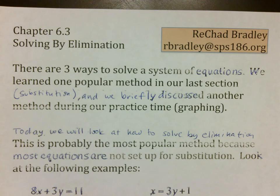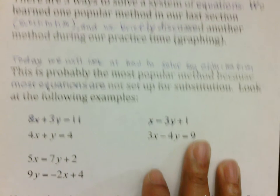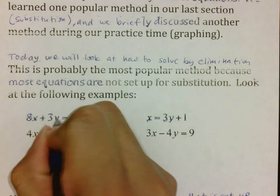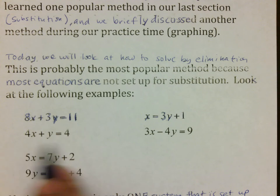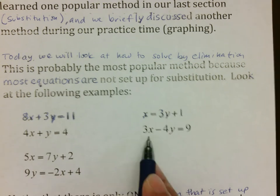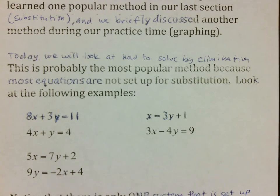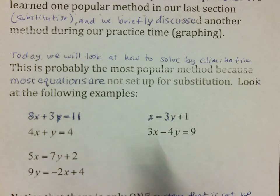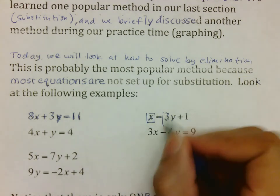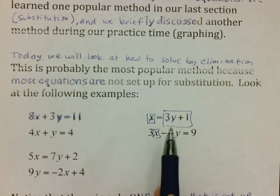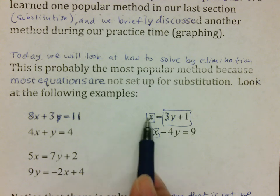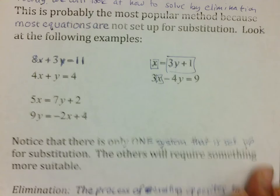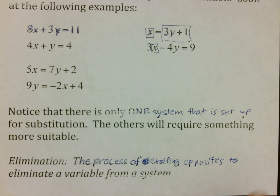This is probably the most popular version because most things are not set up for substitution. If you look at these three equations, you have 8x plus 3y equals 11, 4x plus y equals 4. Another one, x equals 3y plus 1, 3x minus 4y equals 9. This is probably about the only one that we can set up because we have an x all by itself. You have to be able to recognize when you can substitute. Notice that there's only one system set up for that. The others would require something more suitable.